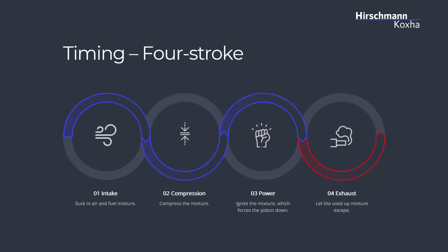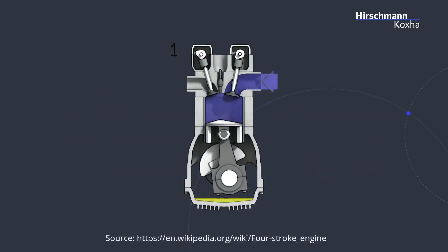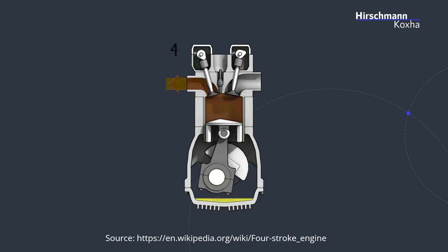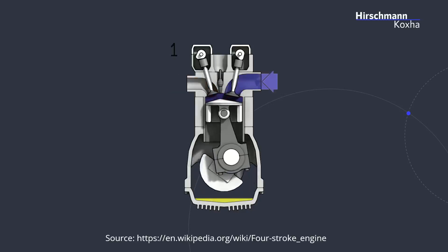Our engines are so-called four-stroke engines. The first one is the intake stroke — this is when we suck in the air and fuel mixture. Then we have a compression stroke, which means we move the piston back up again and compress what has been sucked into the cylinder. Then we have a power stroke: we ignite the mixture, which forces our piston to go back down. And this is followed by the exhaust stroke, when the exhaust valve opens and lets the used-up mixture escape. We can see this in the graphic: intake, compression, ignition, then the exhaust stroke where the exhaust valve is open and we let it exit again.